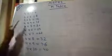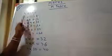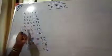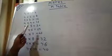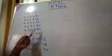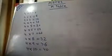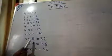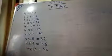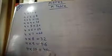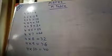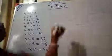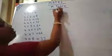Again: 4, 1's are 4. 4, 2's are 8. 4, 3's are 12. 4, 4's are 16. 4, 5's are 20. 4, 6's are 24. 4, 7's are 28. 4, 8's are 32. 4, 9's are 36. 4, 10's are 40. Likewise, we have to learn the table of 4.